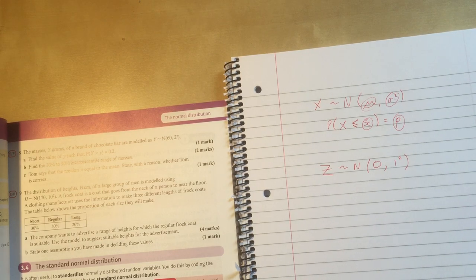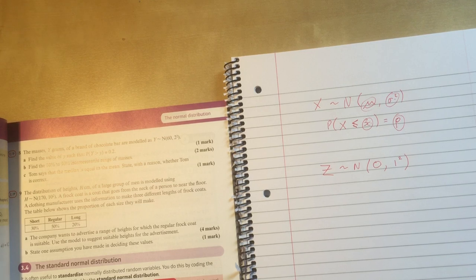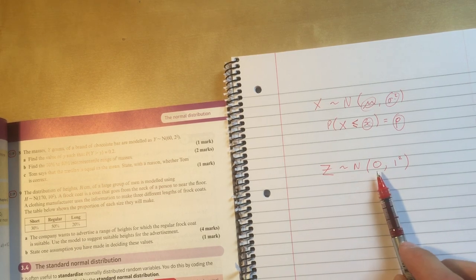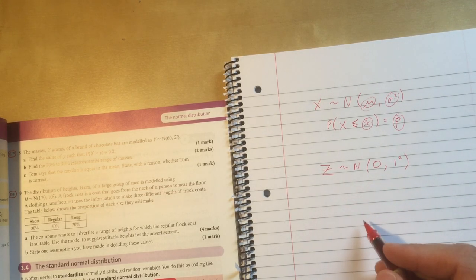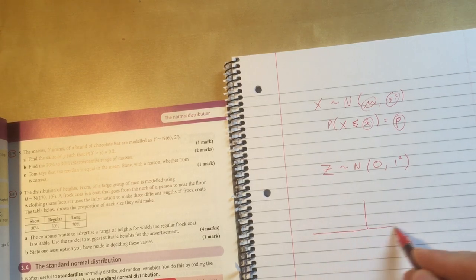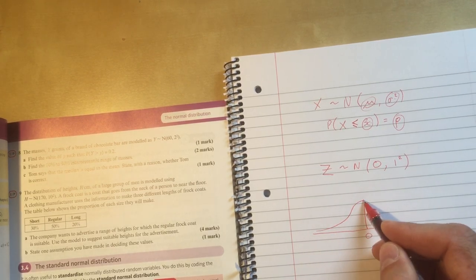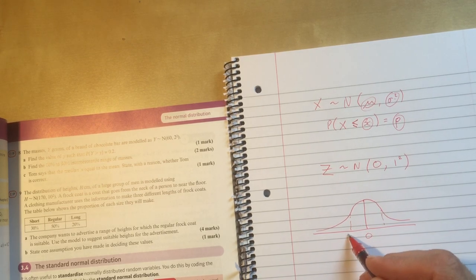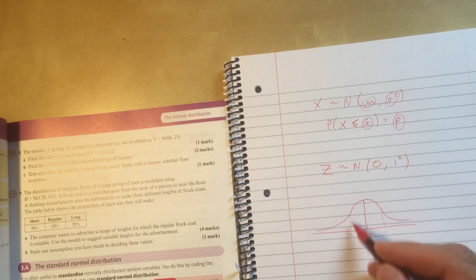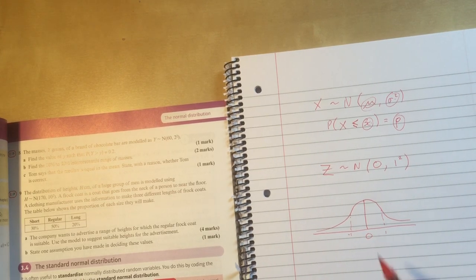And it's true that until 2017, that's exactly how we did it, except that, of course, you can't have a table in the back of the textbook for every possible mu and every possible sigma. You'd end up with pages and pages of tables. So what we do instead is we just have one table in the back of the textbook. We have one normal distribution we deal with, and it's the one with mu is zero and sigma is one.